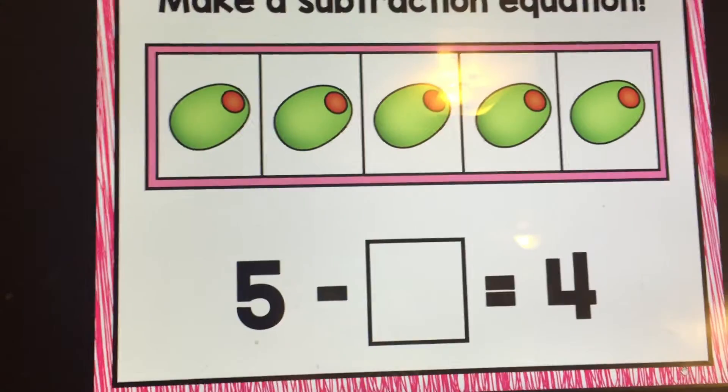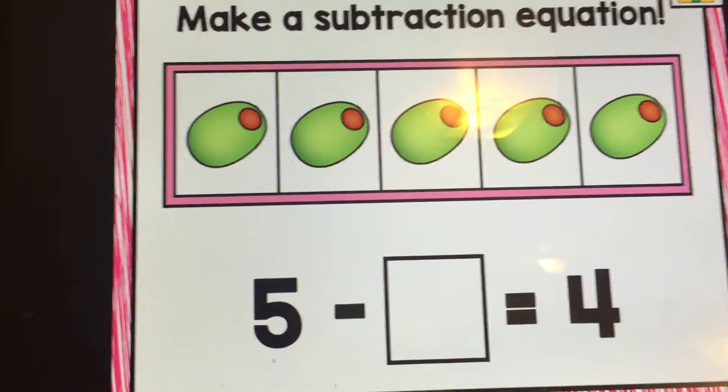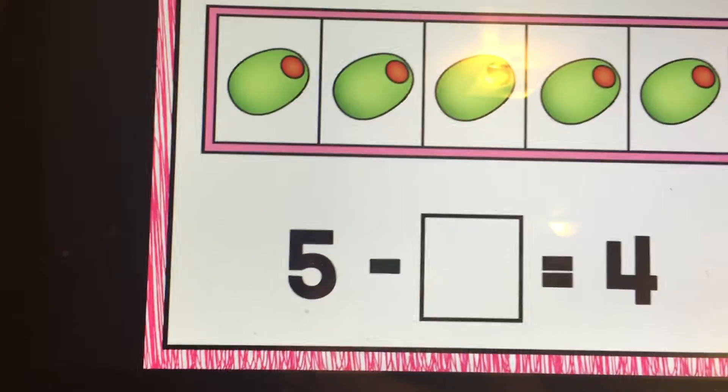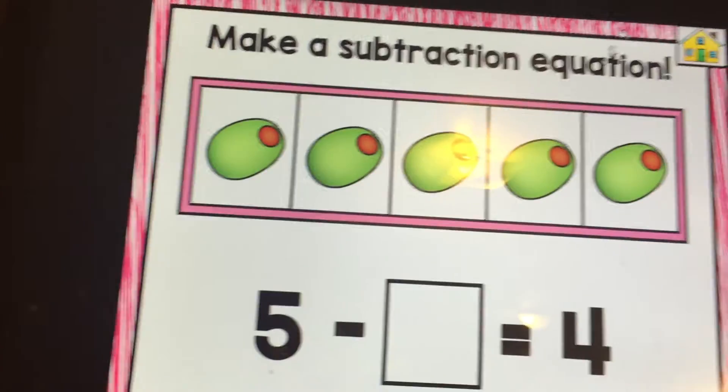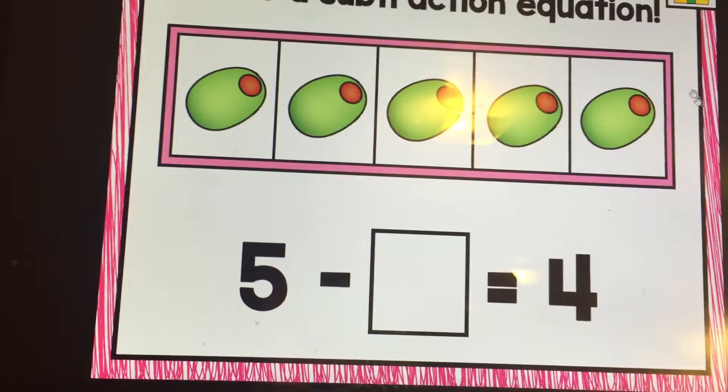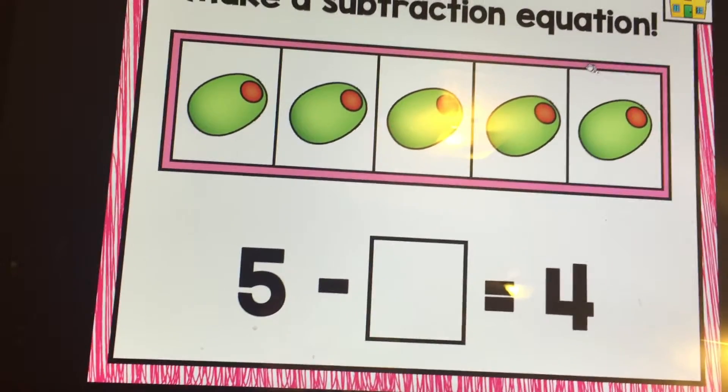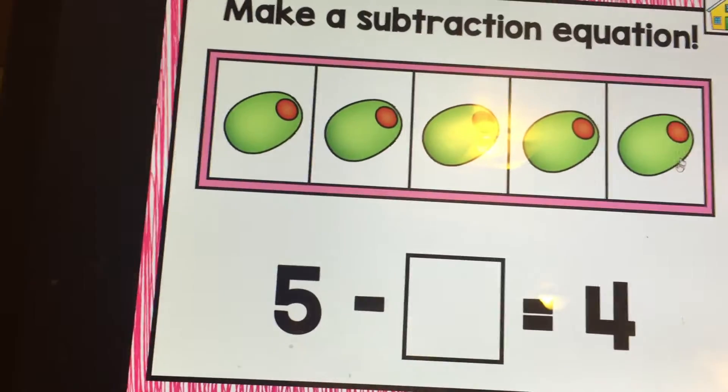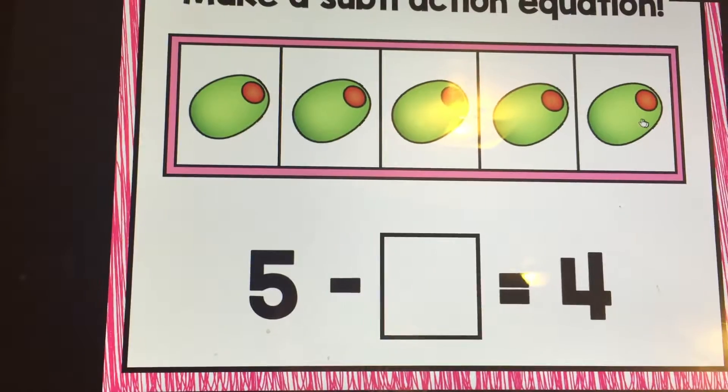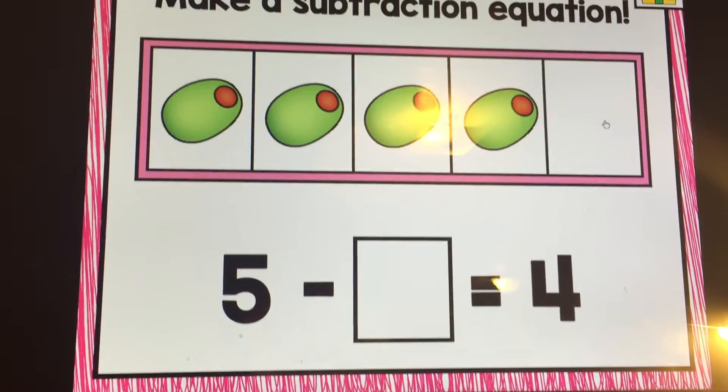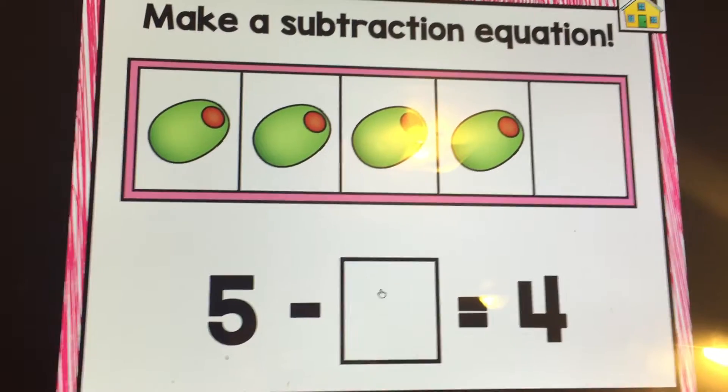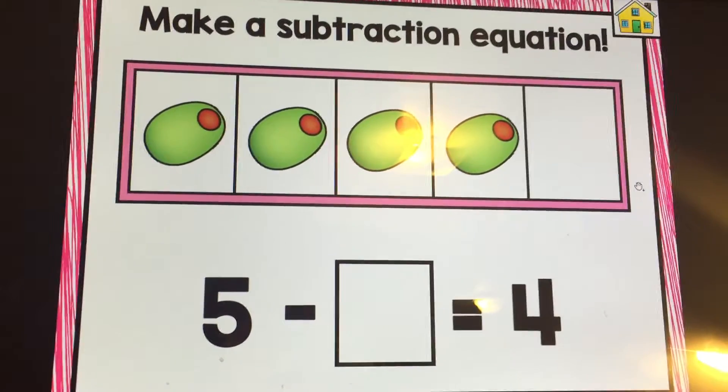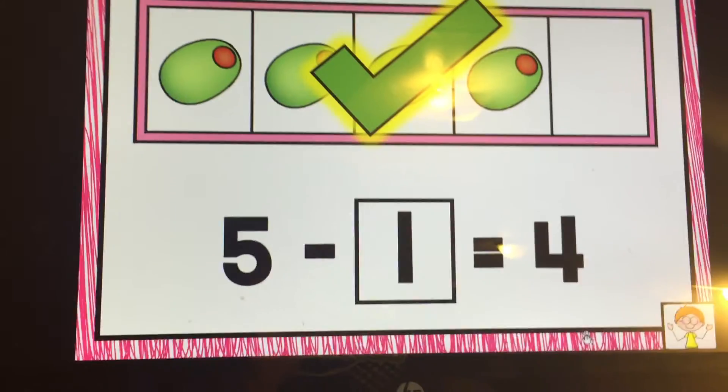Okay boys and girls, now we're going to make a subtraction equation. And that means we're going to take away some things to get back down to four. We had four before and now I want to go back down to four. So we'll see how many we have to take away to get back to four. So click here. Oh, there's four. See, one, two, three, four, five take away. How many did we take away? One. Five minus one equals four.